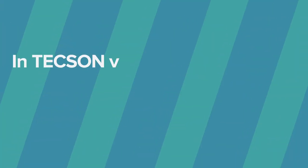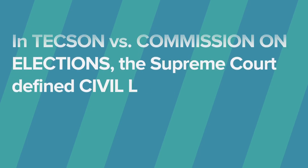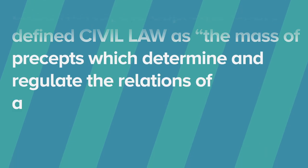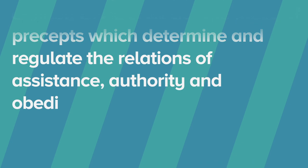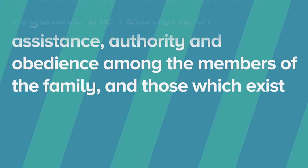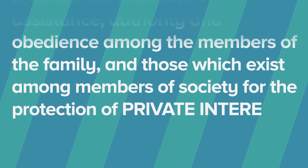In Texan v. Commission on Elections, the Supreme Court defines civil law as the mass of precepts which determine and regulate the relations of assistance, authority, and obedience among the members of the family and those which exist among members of society for the protection of private interests.